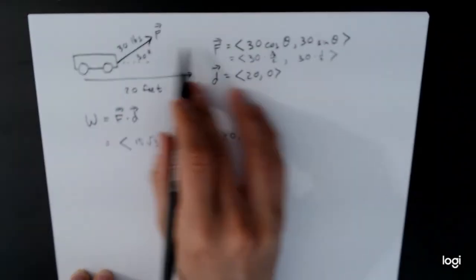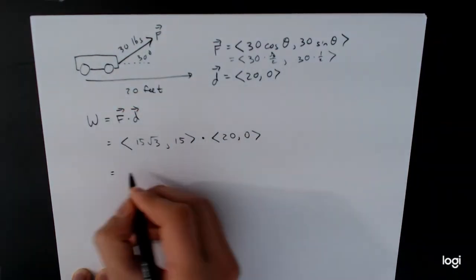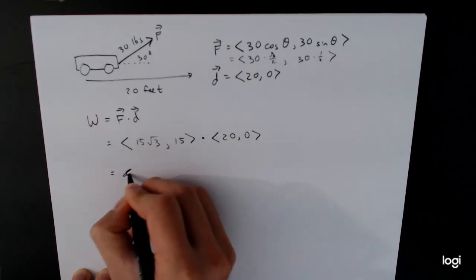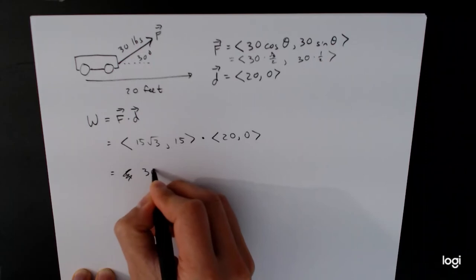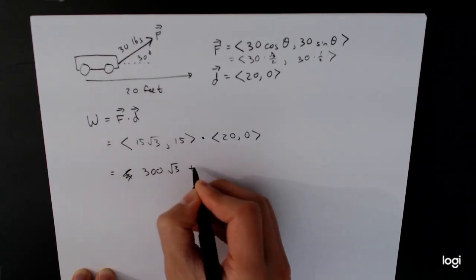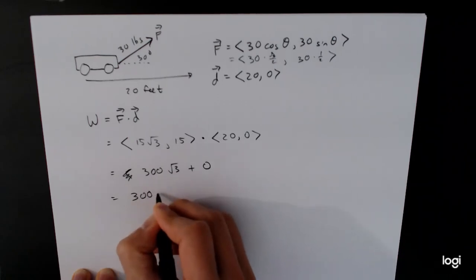So we had to write our force in components and take its dot product with the displacement, d. And this is going to equal 15 root 3 times 20 is going to be 300 root 3 plus, well, 15 times 0 is 0. And so this is 300 root 3.